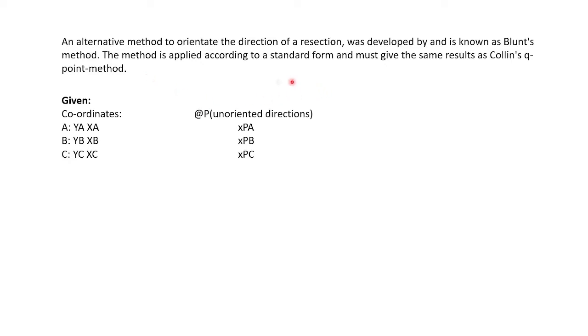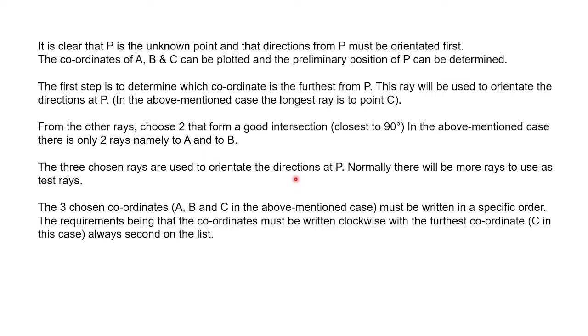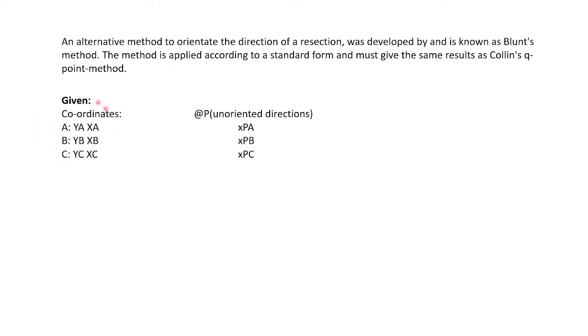So it's easier to do as in you just have to follow the basic steps, but it's less visual. So let's first say the given coordinates - you have A, B, and C. Those are three beacons you have, as well as the unorientated directions or the observed directions from P to each A, B, and C. You see how they're written A, B, and C at the moment, but later we're going to swap them around.